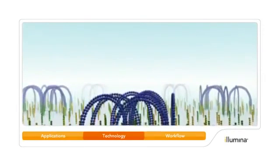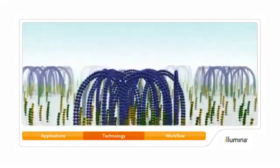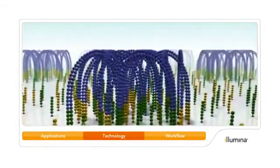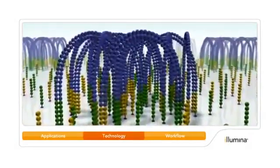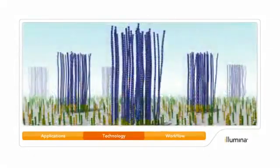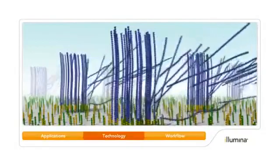Each library fragment is clonally amplified through a series of extensions and isothermal bridge amplifications, resulting in hundreds of millions of unique clusters. The reverse strands are cleaved and washed away.